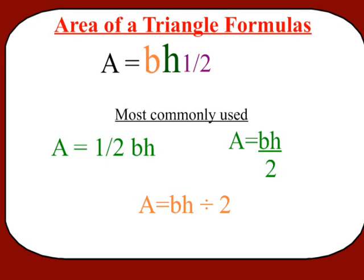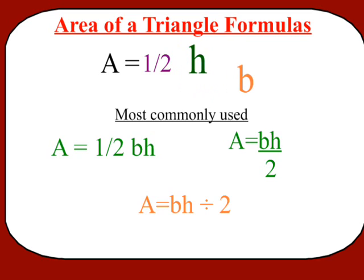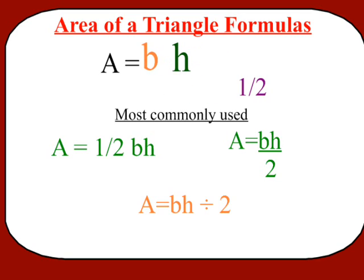If you remember the commutative property of multiplication, it states that it doesn't matter what order we multiply our factors. So you could use one half times base times height, or one half of the height times the base, or multiply the base times the height and then take half of that. It doesn't matter what order you multiply those three factors, and that's going to come in real handy when working with triangles.